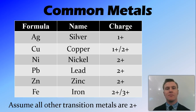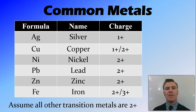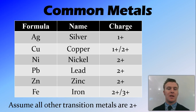Here are some transition metals that aren't in that first 20. Transition metals can be a little bit tricky because of the way their electrons are found in different shells, but some common metals used in chemistry are: silver with a valency of 1+; copper, which can be 1+ or 2+; nickel, 2+; lead, 2+; zinc, 2+; and iron, which can be 2+ or 3+. If you ever come across another transition metal, assume it is 2+, because most of them are.